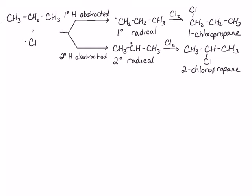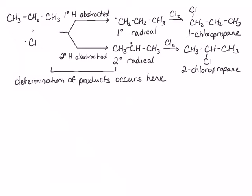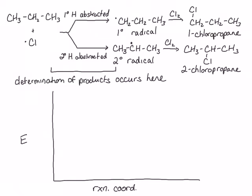Therefore, it is the first propagation step where determination of the product occurs. We need to look at the energetics of this first propagation step to understand why the secondary radical is formed in abundance compared to the primary radical, resulting in a higher amount of 2-chloropropane. Let's draw a reaction coordinate diagram. Since the reactants are the same for both pathways, they are at the same energy. We can calculate delta-H for this reaction using the bonds broken and formed, and we see that both steps are exothermic, but the step to form the secondary radical is more exothermic.